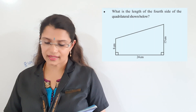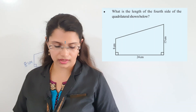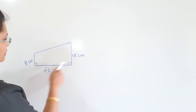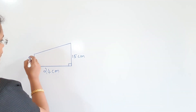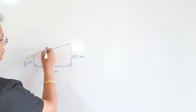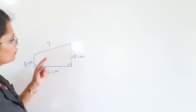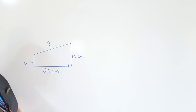Now let us do the exercise. Take page number 188. The first question: what is the length of the fourth side of the quadrilateral shown below? We have sides 1, 2, 3, and the fourth side — we have to find this side. Can you apply Pythagoras theorem here?